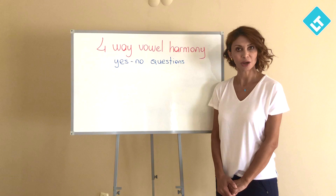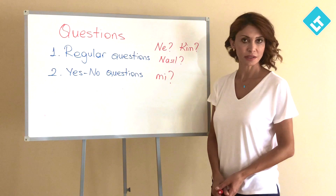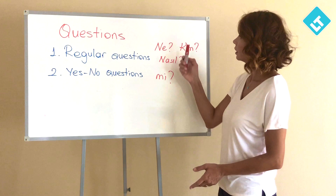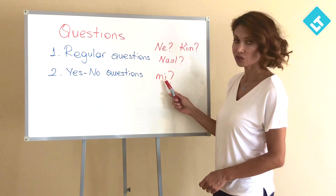Question sentences can be classified into two groups in Turkish: regular questions and yes-no questions. Regular questions are constructed using question words like in English, such as ne, kim, or nasıl — like WH questions in English. Yes-no questions are constructed using the question particle mi.